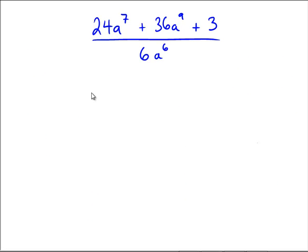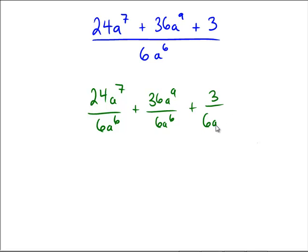Assuming you gave it a shot here, hopefully we got 24a to the seventh over 6a to the sixth plus 36a to the ninth over 6a to the sixth plus 3 over 6a to the sixth.